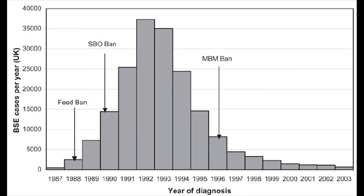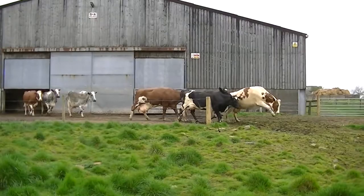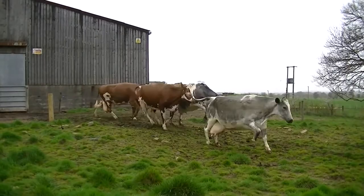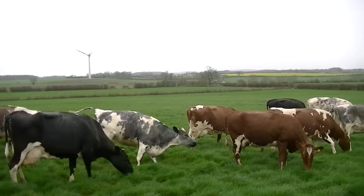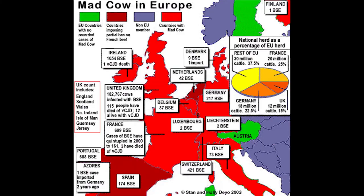The BSE epizootic in the United Kingdom peaked in January 1993 at almost 1,000 new cases per week. Since then, the annual number of BSE cases have dropped sharply. Cumulatively, through the end of 2015, more than 184,500 cases of BSE have been confirmed in the United Kingdom alone, and more than 35,000 herds of cattle. Outside of the United Kingdom, BSE has been most prevalent in nearby European nations, such as France and Portugal, during the outbreak.